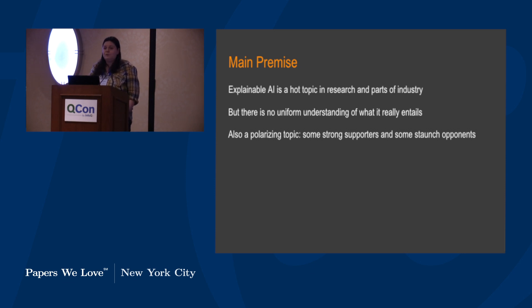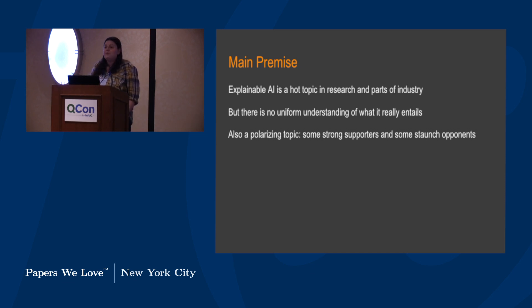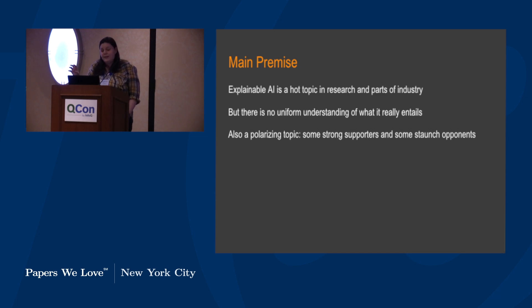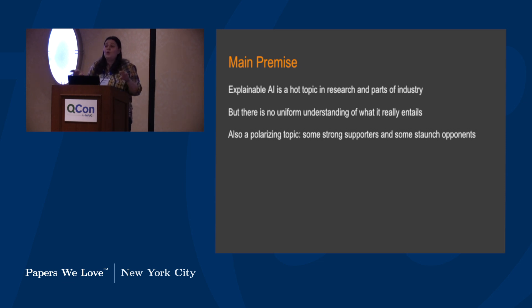You find the likes of Facebook and Google and Microsoft starting to talk about explainability in AI models. But ironically, there's no uniform definition of what that actually means. What is explainable AI? What do we want out of an explainable AI system? It's also a very polarizing topic. So we don't really know what it is, but we know that we either love it or hate it.